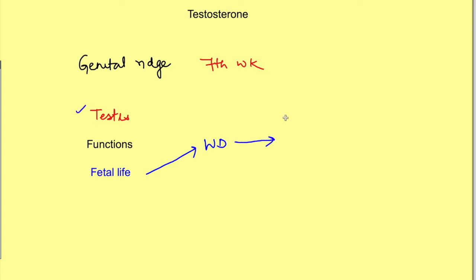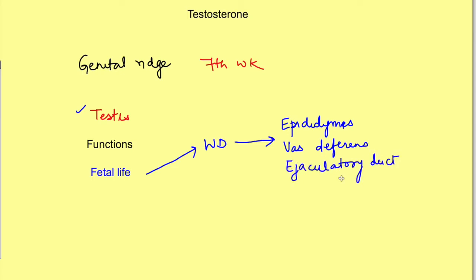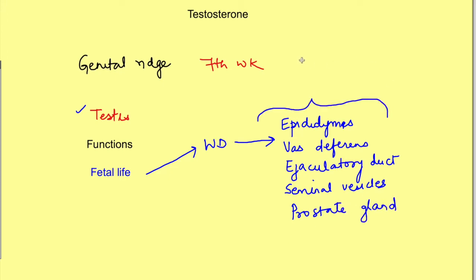Development of the testis doesn't depend on testosterone, but the male reproductive tract — that is, epididymis, vas deferens, ejaculatory duct, seminal vesicles, and prostate gland — all depend on testosterone. Not only the development, but also in adult life the tract has to be maintained. So if testosterone is not present, there will be degeneration in these parts of the male reproductive tract. It also causes the maintenance of these parts.